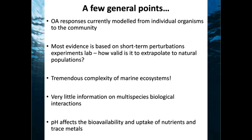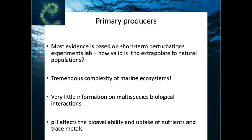pH affects every level of the food chain both indirectly and directly. A change in pH affects the bioavailability and uptake of nutrients and the same for trace metals, which could affect photosynthesis and each subsequent level of the food chain. Let's start with the photosynthesizers — the primary producers.